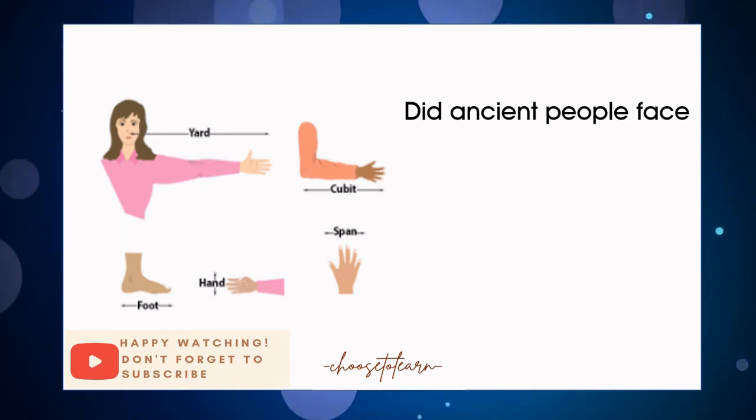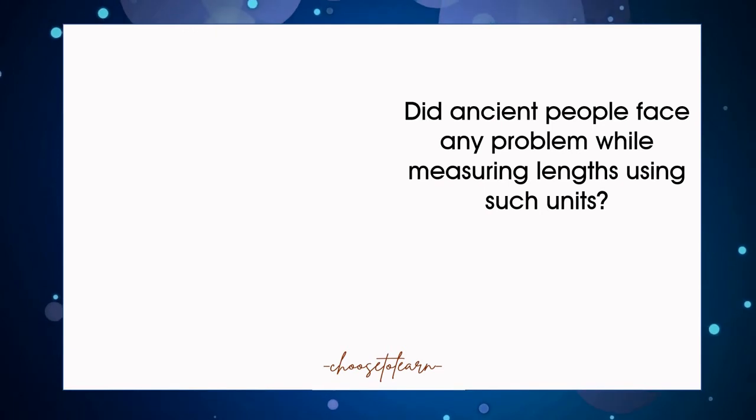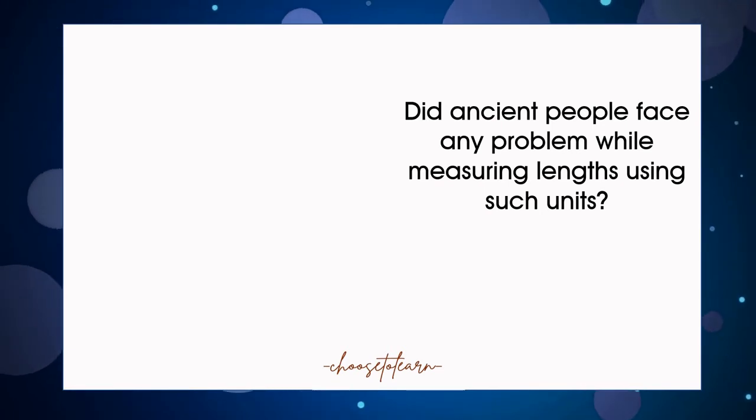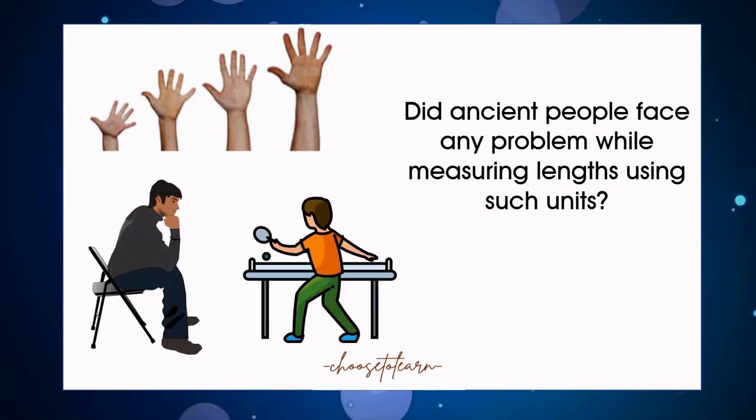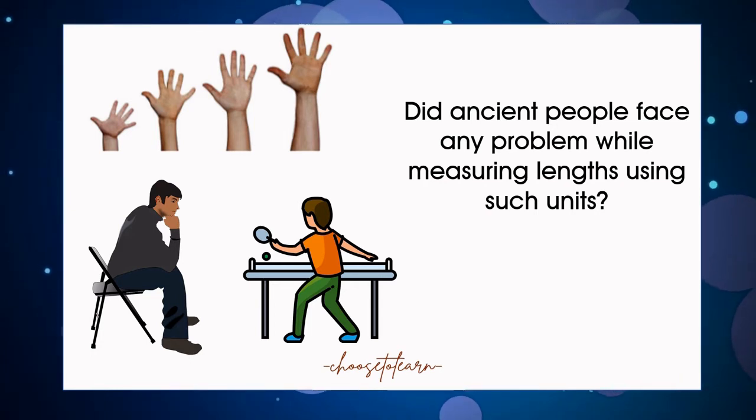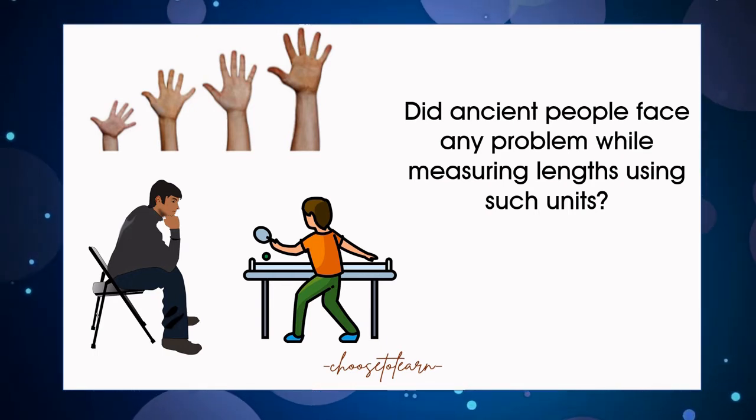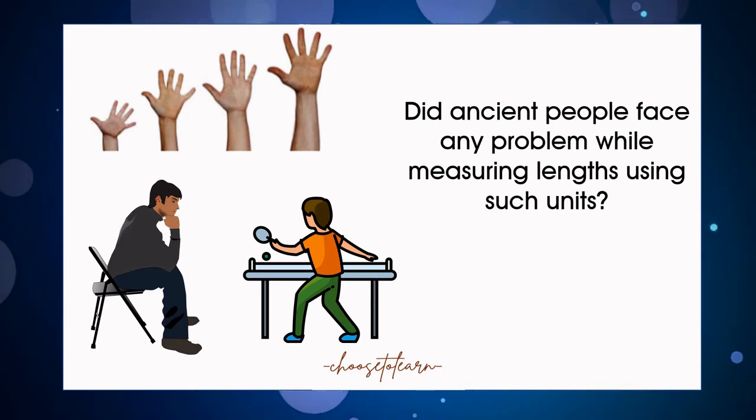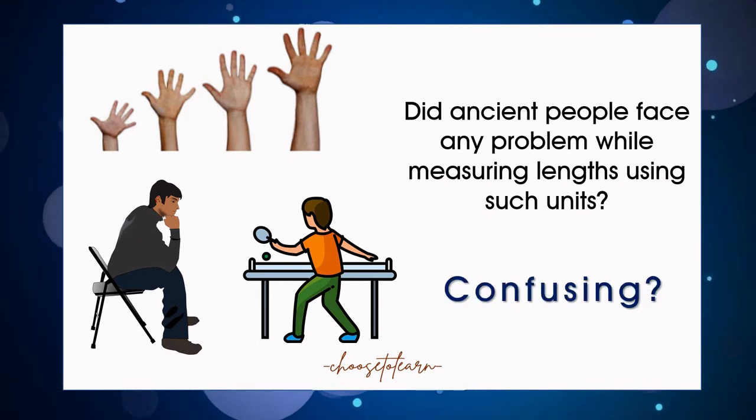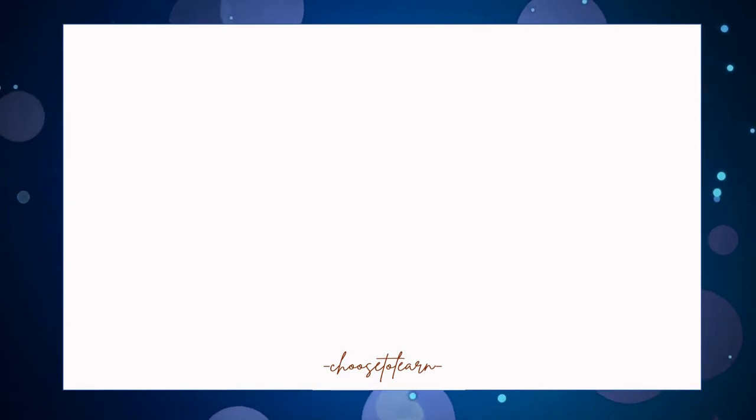Did ancient people face any problem while measuring lengths using such units? Everyone's body parts are different. The feet, handspans, and the arm lengths are bigger or smaller in different people. So if we measure the length of objects like chairs or tables using the body parts, we will definitely get different readings in each measurement. To avoid such confusion, units of measurement were standardized, which was about 200 years ago.